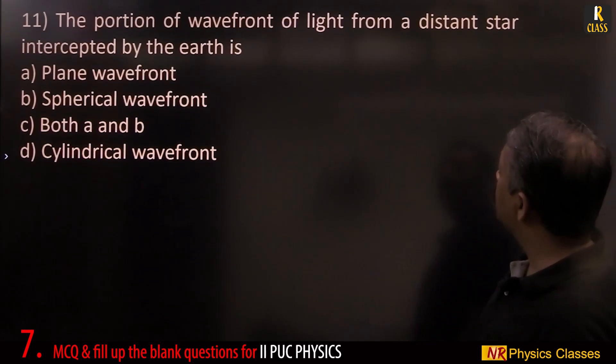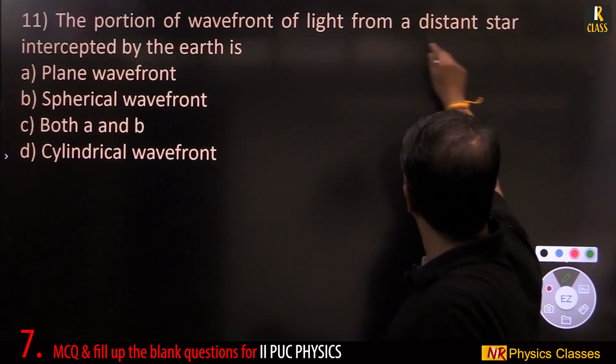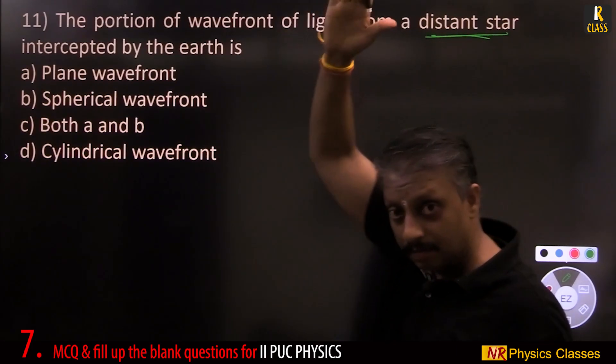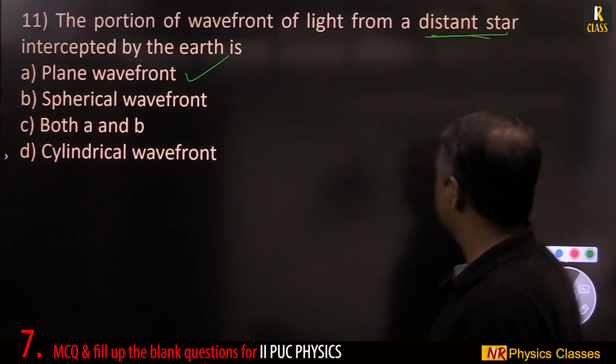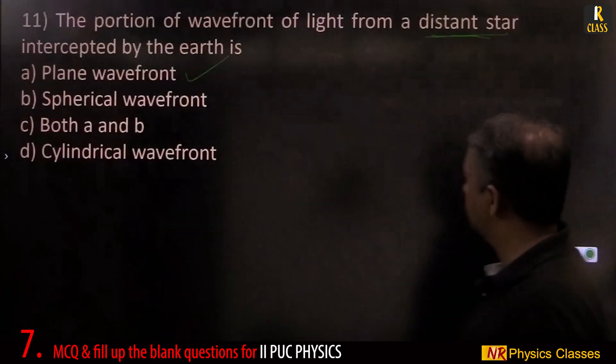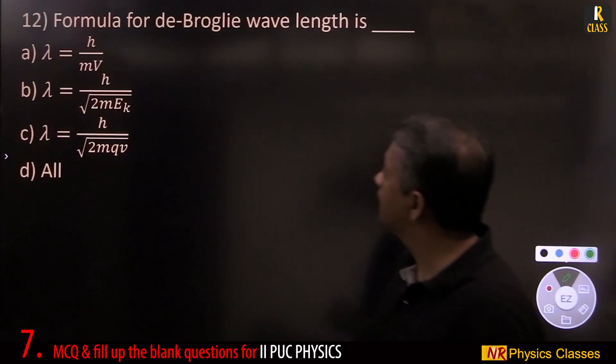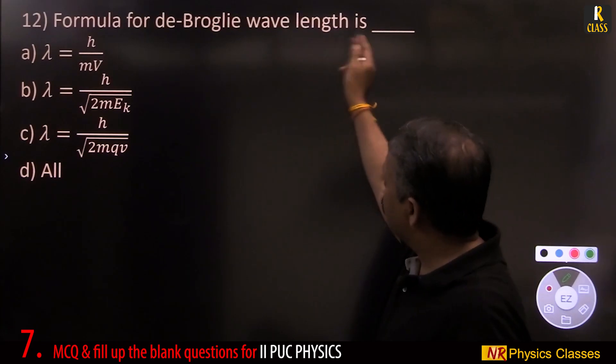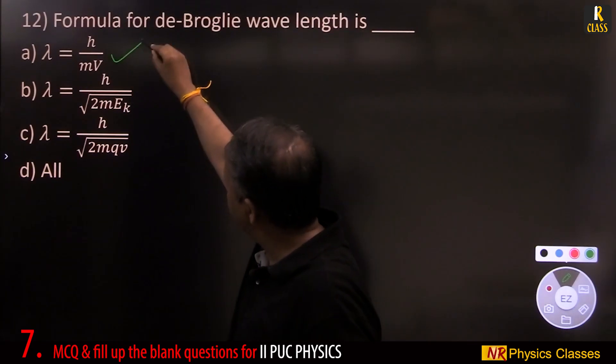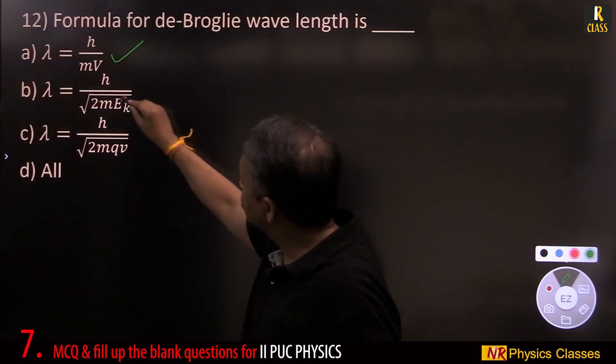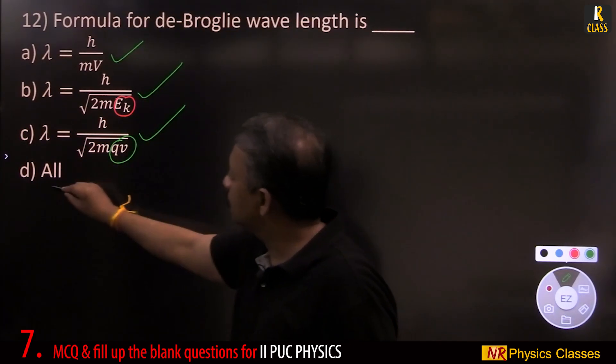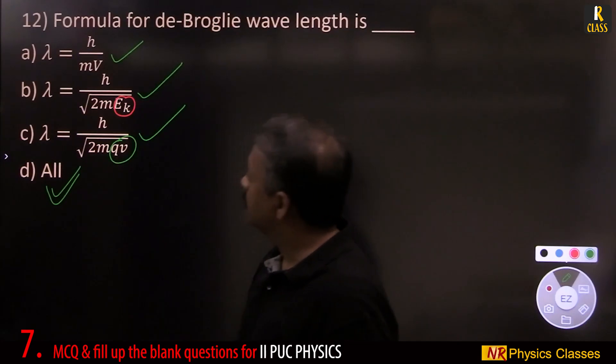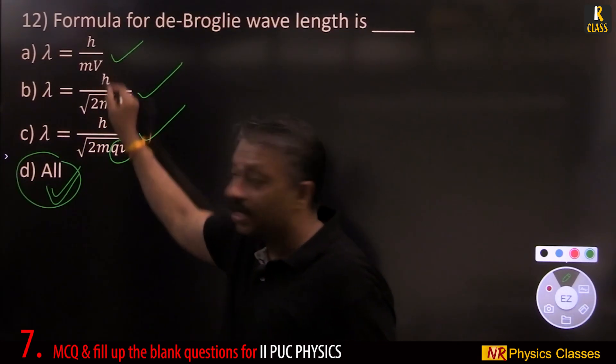The portion of wavefront of light from a distant star is plane wavefront. Formula for de Broglie wavelength is h by mv, h by square root of 2m kinetic energy. Kinetic energy is q into v. So all of them are correct.